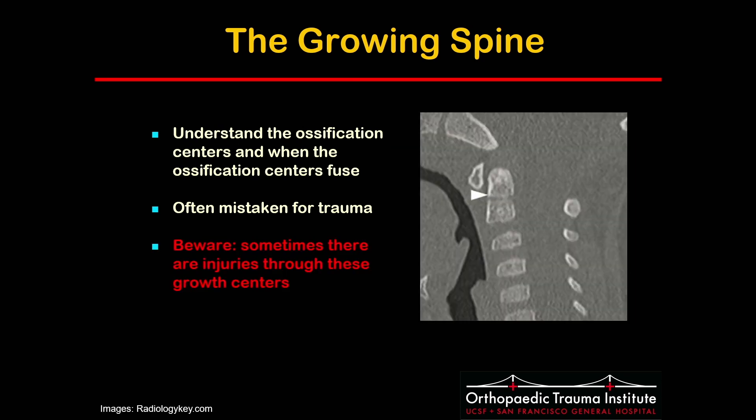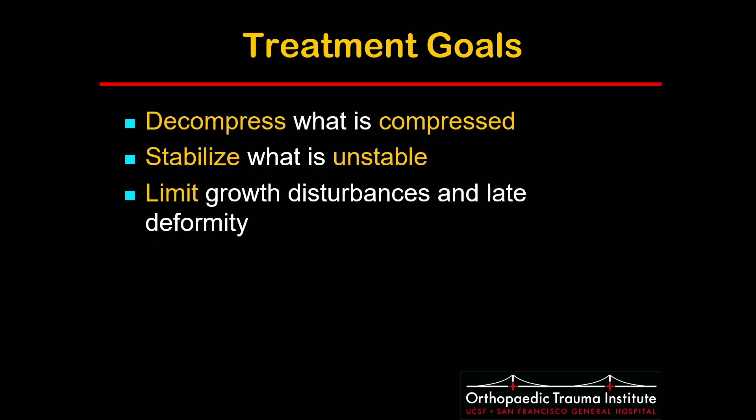In the non-ossified area of the odontoid, you could have injuries through them just like Salter-Harris fractures. The treatment goals of any trauma are to decompress what is compressed and stabilize what is unstable. However, in the pediatric population, you also want to limit growth disturbances and late deformity. For example, you would try to avoid doing an anterior fusion in the cervical spine of a pediatric patient to not induce kyphosis with further growth.